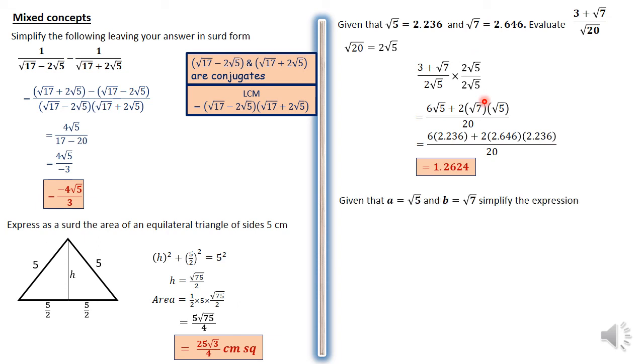Moving on to the last question we have, given that a is root 5 and b is root 7, simplify the expression we are given there. Now, the students should understand that root 20 can be simplified further. Root 112 can also be simplified, and root 28 can also be simplified. Therefore, those three simplified will be 2 root 5, 4 root 7, and 2 root 7 respectively. And since we are given a is root 5 and b is root 7, we can put the values of a and b in the numerator and denominator respectively.